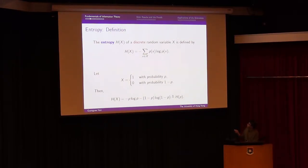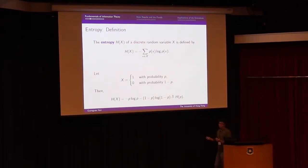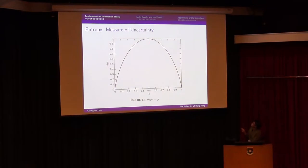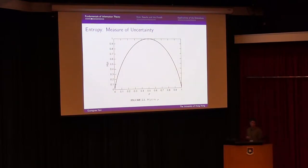But when p equals 0.5, it's like a uniform distribution. The random variable cannot be more random than a uniform distribution, and in that case the H(p) function reaches its maximum. That's a quick, rough explanation of what entropy means.